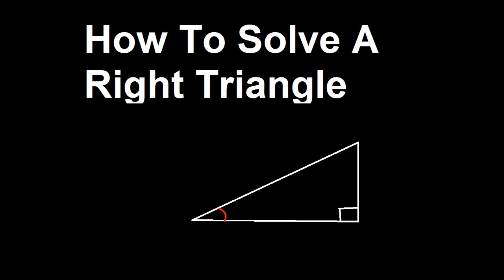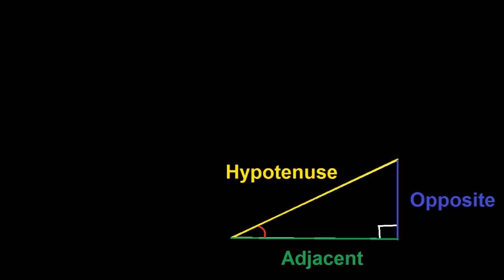How to solve a right triangle. We have the hypotenuse, which is the longest side of the right triangle, and we have the side opposite of the angle, and we have the side adjacent of the angle.